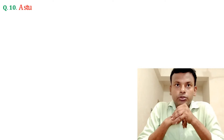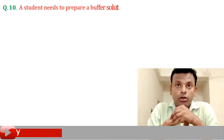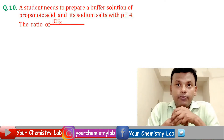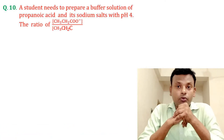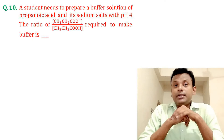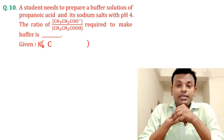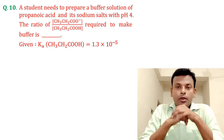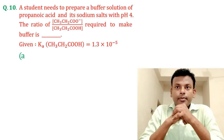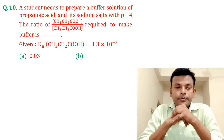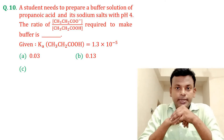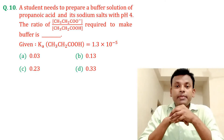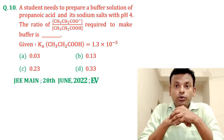Question ten: a student needs to prepare a buffer solution of propanoic acid and its sodium salt with pH 4. The ratio of concentration [CH3CH2COO⁻]/[CH3CH2COOH] required to make the buffer is blank. Given Ka of CH3CH2COOH equals 1.3 times 10 to the power minus 5. Options A, B, C, and D. This question was set in JEE Main 28th June 2022 evening shift.